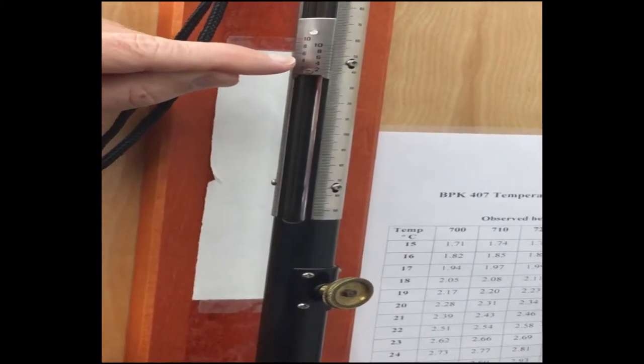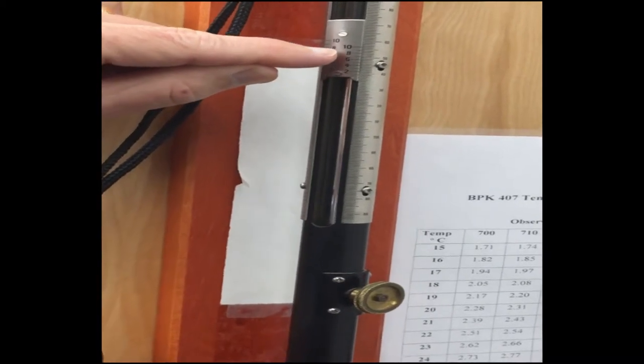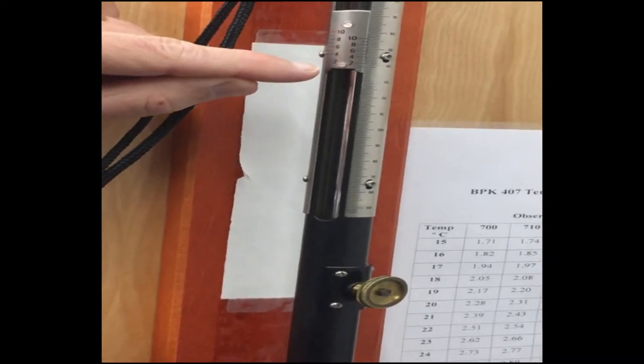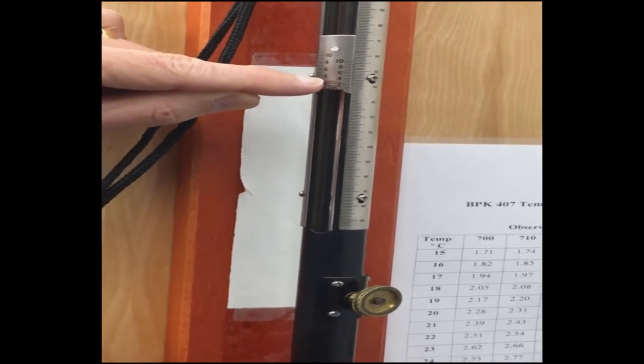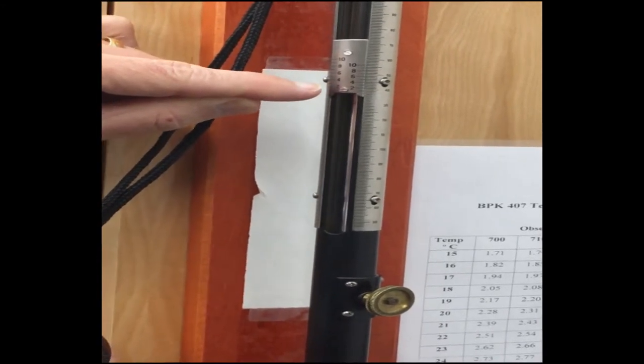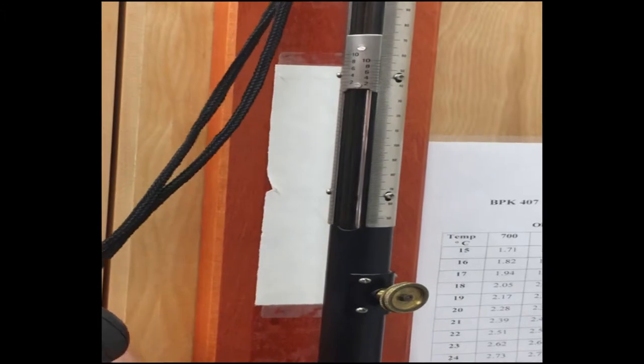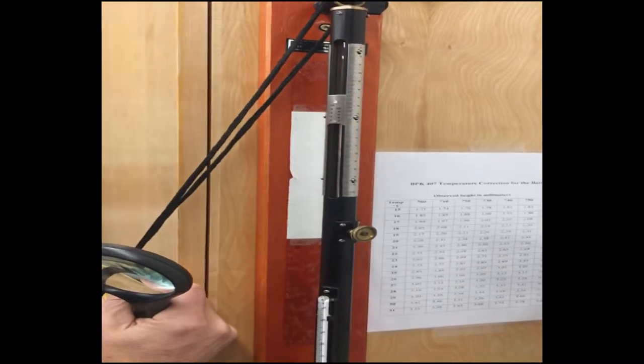The way the vernier scale works is only one of these numbers will line up directly with the line across from that. I look at that, my number 3 is lined up directly with the line across from that. So that gives me a barometric pressure of 737.3.